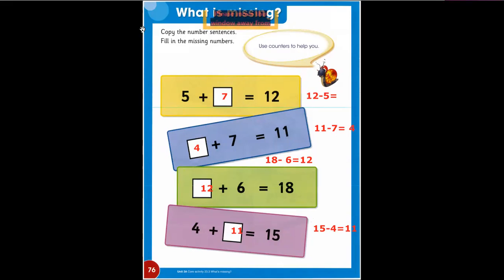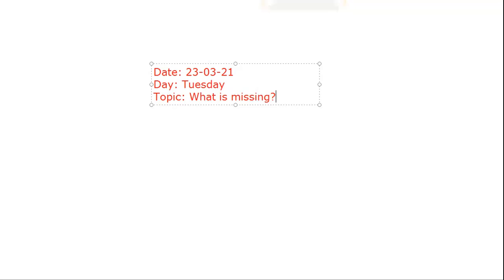Okay. I think most of you have finished. Open your notebooks and write with me. First of all, I'm going to write date. Date is 23. Day is Tuesday. And our topic is What is missing? What is the meaning of missing? Means something is not there. It is incomplete. So missing means something incomplete. There is something that is not there. Okay.